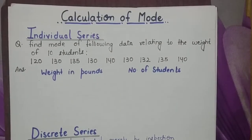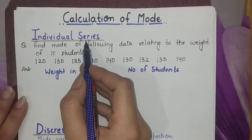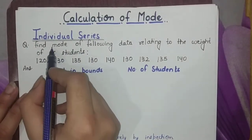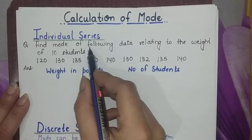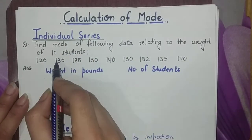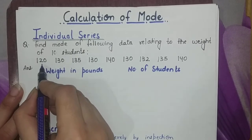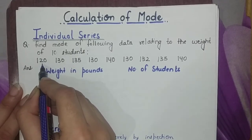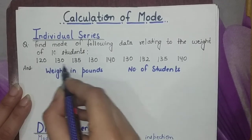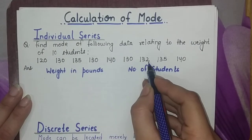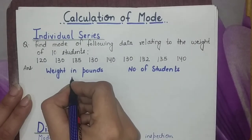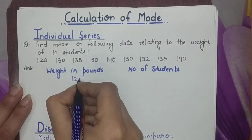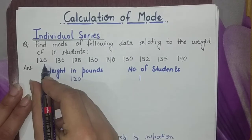Now we will see the calculation of mode in individual series and discrete series. To explain better, I have taken up a question. The question is asking us: find the mode of the following data relating to the weight of 10 students. The data given is: 120, 130, 135, 130, 140, 130, 132, 135, 140 in pounds.